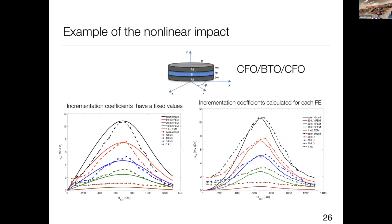Here is an example showing the non-linear impact. We simulated a CFO/BTO/CFO composite — BTO is the piezoelectric layer, CFO is the magnetostrictive layer. Comparing measurement and simulation: in the first case, each incremental coefficient has a fixed value at a given bias point; in the second case, the coefficient is updated for each finite element. The second case is better because it accounts for the non-uniform magnetic field distribution inside the structure.